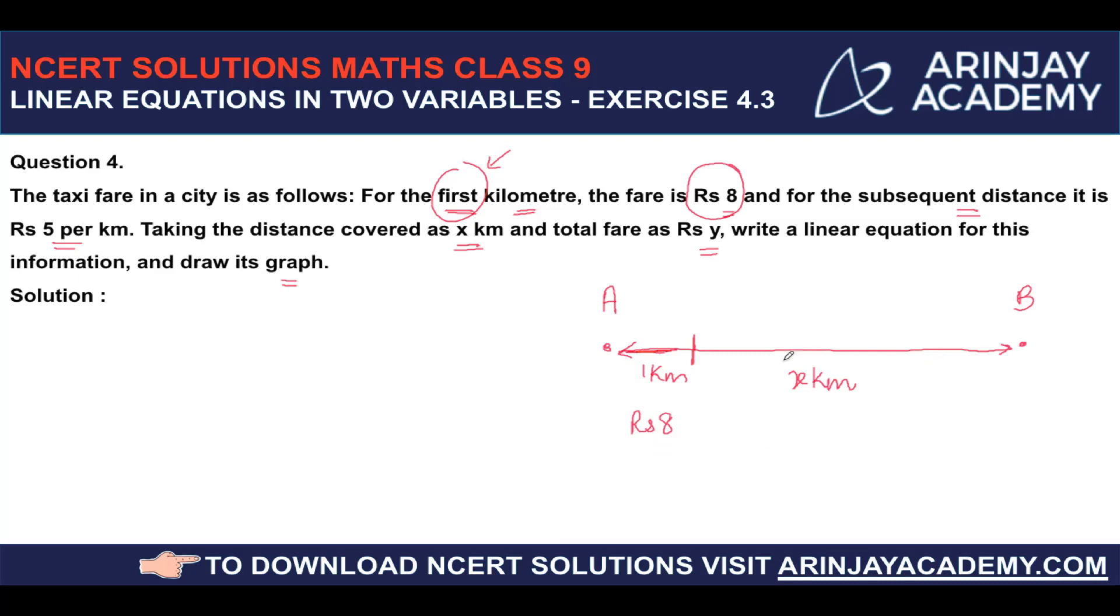But for the remaining distance, now if this total distance is x kilometer and this part is 1 kilometer, what is the length of this distance? It will be obviously x minus 1 kilometer.